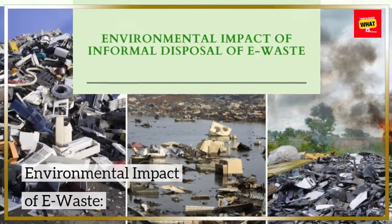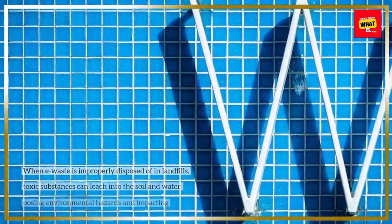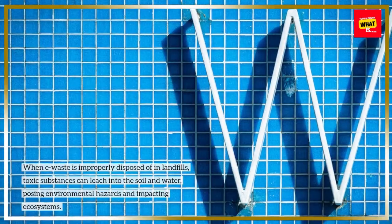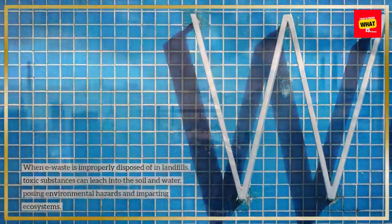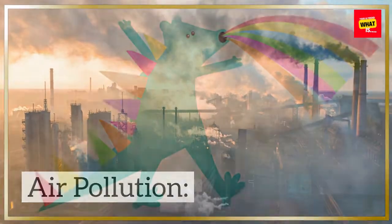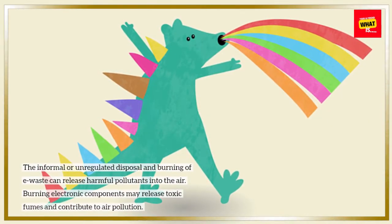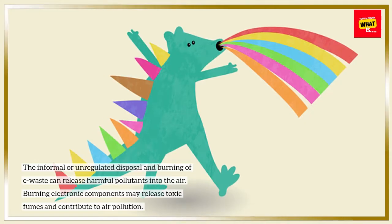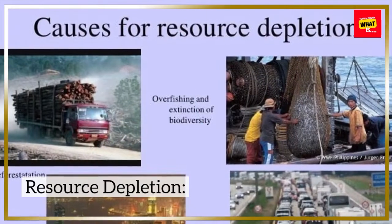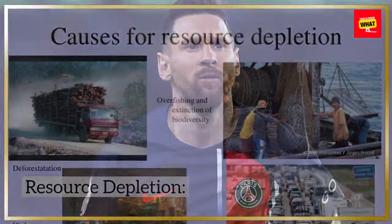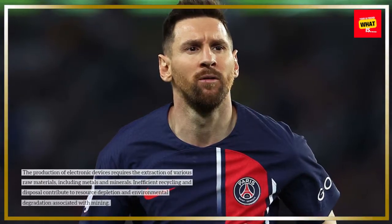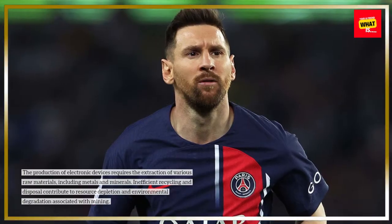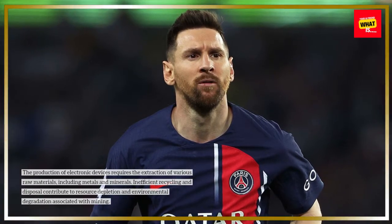Environmental Impact of E-waste: Toxic Substances Leaching — When e-waste is improperly disposed of in landfills, toxic substances can leach into the soil and water, posing environmental hazards and impacting ecosystems. Air Pollution — The informal or unregulated disposal and burning of e-waste can release harmful pollutants into the air; burning electronic components may release toxic fumes and contribute to air pollution. Resource Depletion — The production of electronic devices requires the extraction of various raw materials, including metals and minerals. Inefficient recycling and disposal contribute to resource depletion and environmental degradation associated with mining.